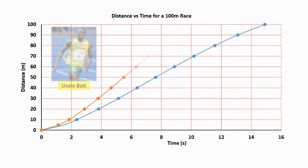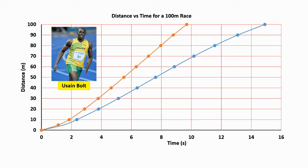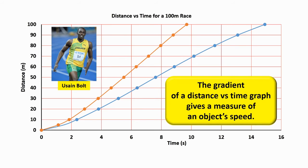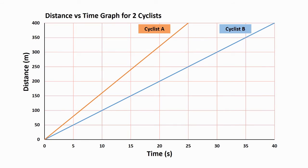The orange line here is Jamaican athlete Usain Bolt's distance versus time graph for his 2008 then world record 100 metre sprint, which he completed in just 9.69 seconds. His graph is clearly much steeper than mine, since he covered the same distance in much less time. Now, we normally refer to the steepness of a graph as its gradient. And in fact, the gradient of a distance versus time graph gives a measure of an object's speed.